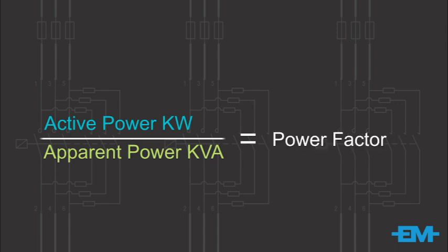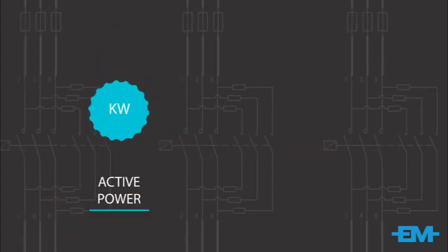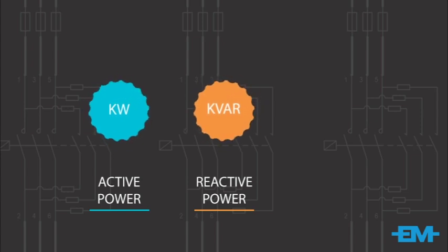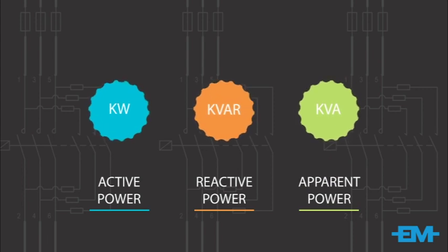Let's first look at some basic terms. KW is the power that actually powers the equipment and performs useful work — we'll call it active power. KVAR is reactive power; it is the power that magnetic equipment such as transformers, motors and relays need to produce the magnetizing flux — this is non-useful power. KVA is apparent power, the total power consumed: KVAR plus KW.